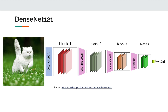Using full images as input, Rajpurkar et al. reported state-of-the-art classification results in 2017, outperforming many radiologists using the publicly available ChestX-ray 14 dataset, which consists of over 112,000 images containing up to 14 anomalies visible on a chest radiograph.